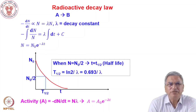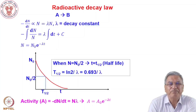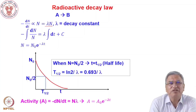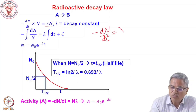The radioactive decay law is like chemical kinetics. In chemistry you have the order of a reaction — if A goes to B you may say it is a first-order reaction. Radioactive decay also follows the first-order rate law. In this law, if N is the number of atoms at any point in time, then −dN/dt, the rate of decay per unit time, is proportional to N. Removing the proportionality sign, lambda (λ) becomes the proportionality constant, so: −dN/dt = λN.